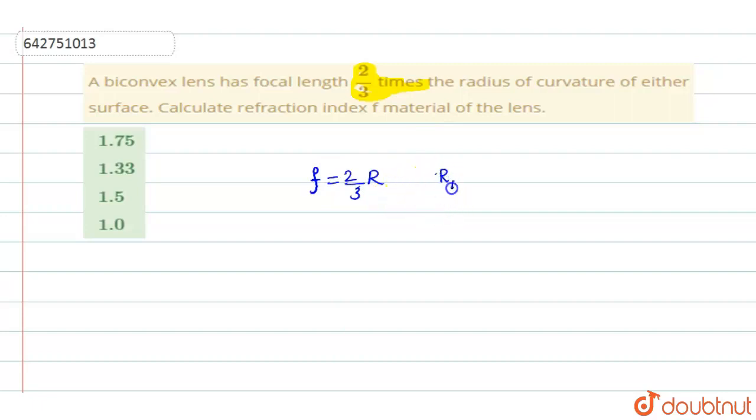And both the surfaces have same radius of curvature because they are telling it is a biconvex lens. So r1 will be equal to plus r and r2 you can take it as minus r. In this you are supposed to find the refractive index n.